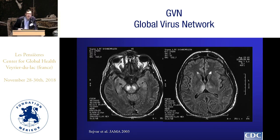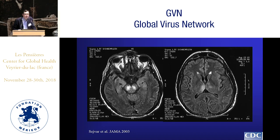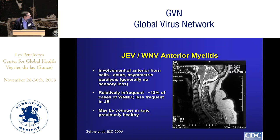There is a definite neuroanatomical substrate for the development of movement disorders. This fluid attenuated inversion recovery MRI from a patient with severe West Nile virus tremor and parkinsonism shows signal abnormality in the substantia nigra — the dopaminergic neurons of the brain — as well as the posterior thalami, two regions heavily involved with movement control. Regarding anterior myelitis, this involves the lower motor neurons or anterior horn cells of the spinal cord, resulting in acute asymmetric paralysis generally without sensory loss — essentially identical to the condition seen with poliovirus. Approximately 12 percent of West Nile neuroinvasive disease cases have this manifestation, and it is somewhat less frequent with Japanese encephalitis.